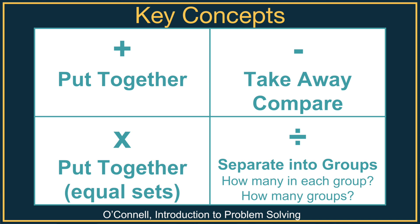Adding is when we put things together. Subtraction is when we take things apart or take away a certain amount. It also is when we're comparing two amounts and looking at the difference between them. Multiplication is when we're putting together same-size sets. Division is when we're separating an amount into certain groups — either a certain number of groups, or knowing how many are in each group. Once I understood these key concepts, it really helped me understand how subtraction is related to addition, how division is related to multiplication, and even how all four operations are connected.